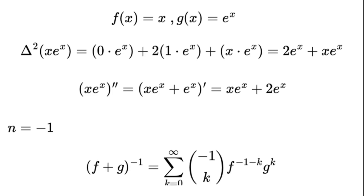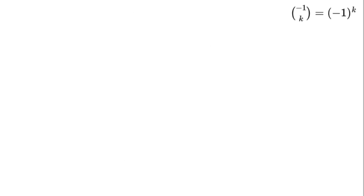f plus g to the power of negative 1 equals the sum from k equals 0 to infinity of negative 1 choose k times f to the power of negative 1 minus k times g to the power of k. The coefficients are: negative 1 choose k equals negative 1 to the power of k.